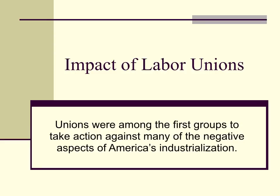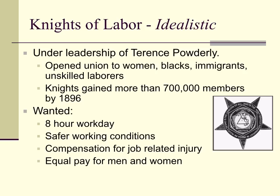Unions were among the first groups to take action against the negative aspects of American industrialization. A huge labor group was the Knights of Labor — very idealistic, under the leadership of Terrence Powderly. They opened the union to women, blacks, immigrants, and unskilled laborers, gaining more than 700,000 members by 1896. What they wanted: an eight-hour workday, safer working conditions, compensation for job-related injury — that's workman's comp — and equal pay for men and women.